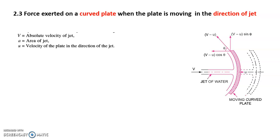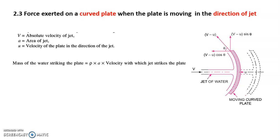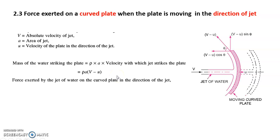If v is the absolute velocity of the jet, a is the area of the jet, and u is the velocity of the plate in the direction of the jet, then mass per second equals rho times a times the relative velocity with which the jet strikes the plate, which is v minus u. Therefore, mass per second is rho times a times (v minus u).